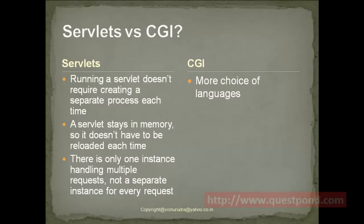Shown are the differences between servlets and CGI. Running a servlet doesn't require creating a separate process. The servlet is loaded in the memory the first time, and for each request, instead of creating a separate process, it creates separate threads, and threads are lightweight as compared to processes. Since it stays in memory, it doesn't have to be reloaded each and every time, and there is only one instance serving multiple requests via multithreading, and a separate instance is not created for each request.